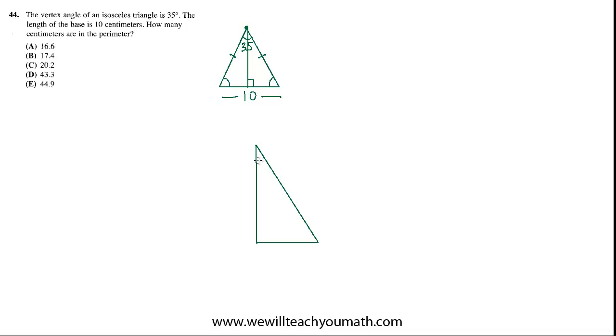And if this is, since it's isosceles, this altitude is the angle bisector for that vertex angle. So this angle then is 17.5 degrees. And because it's an altitude, it forms a right angle at the bottom. So then we could, again, same thing. We could still find the measure of this base angle.